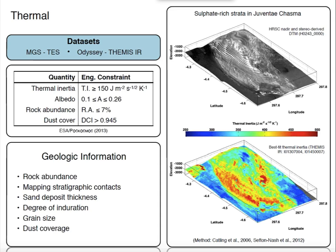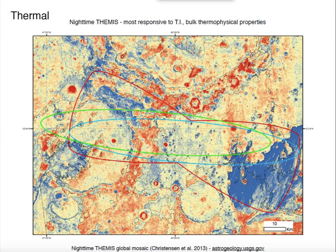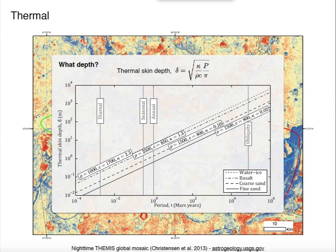On the right is an example of thermal inertia derived for a sulfate mound in Juventus Chasma. The visible data — albedo — correlates quite well with stratigraphy, but that's not always obvious. You might have a completely flat sand sheet where there's still structure in the thermal data. We actually see that quite a lot for the Hippanus delta. This is a stretch of nighttime Themis imagery — the texture here might be related to anastomosing channels in a deltaic environment, or erosion. The point is thermal data is important in any characterization because it shows things you wouldn't otherwise see.